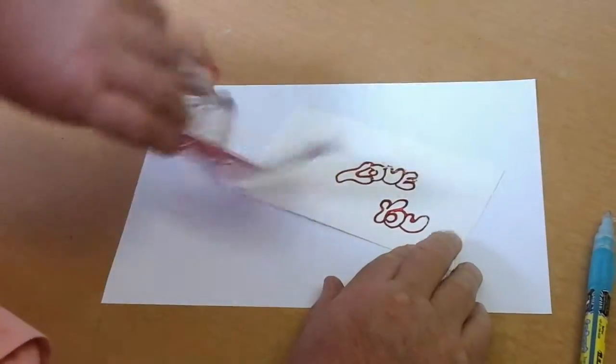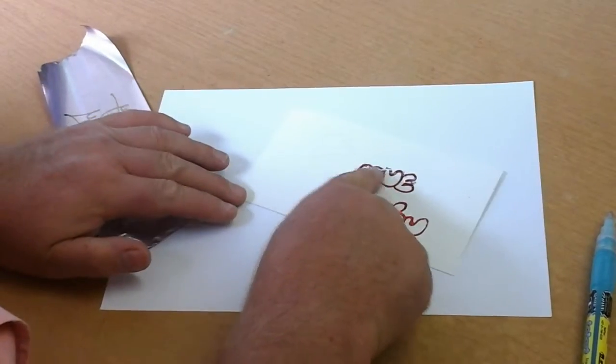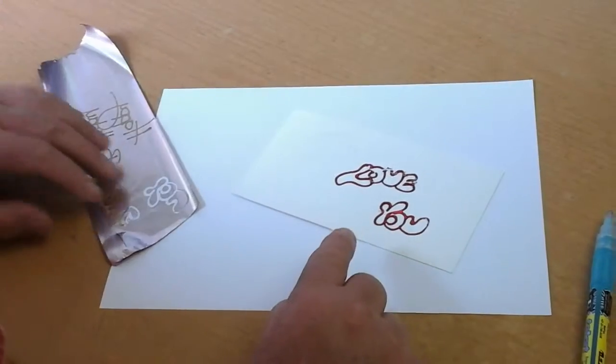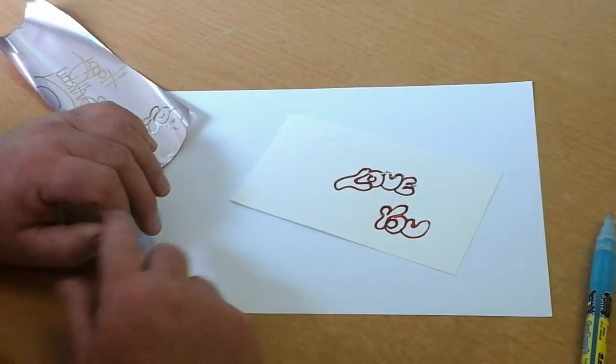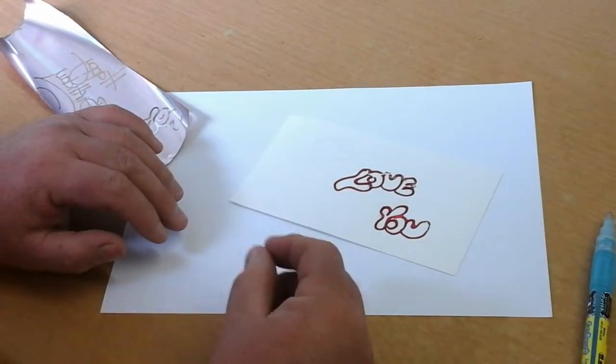When you pull it off, it pulls all those bits of glue that are still wet off. So you're going to have that and then you will have to start all over again.